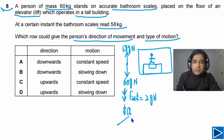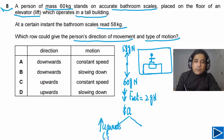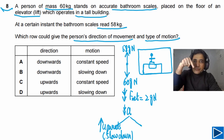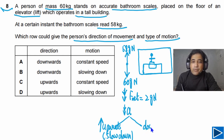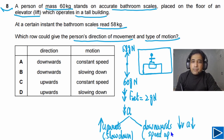If acceleration is downwards, there are two possibilities. If the person is moving upwards — meaning the elevator is moving upwards — then since velocity is upward and acceleration is downward, they oppose each other, so the person will slow down. The second possibility: if the elevator is moving downwards, velocity is also down and acceleration is down, so the person will speed up.